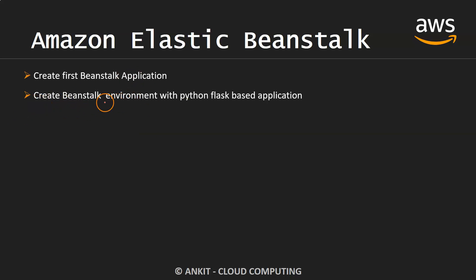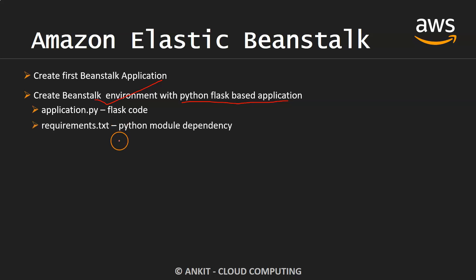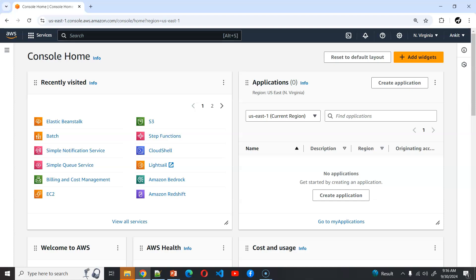We are going to create one separate environment and deploy this Python Flask-based application. For that we require some files: an application.py file containing all the Flask-related code — a very simple Hello World kind of stuff — a requirements.txt file containing all the Python module dependencies required to make your Flask application run, and a .ebextensions folder containing an app.config file.